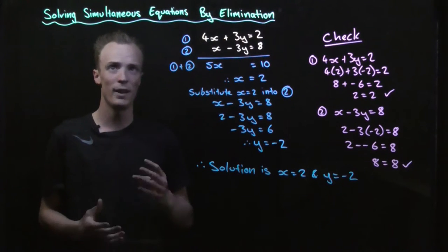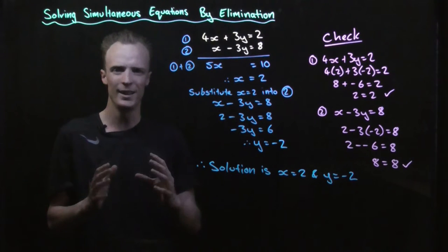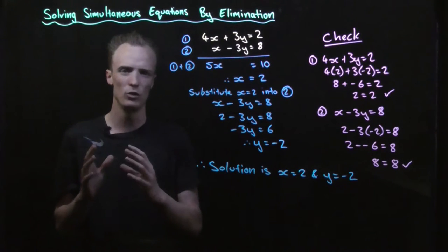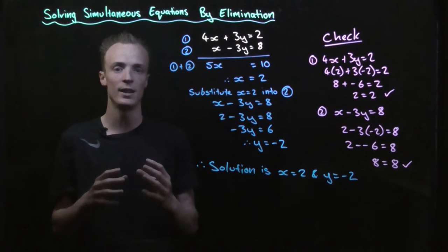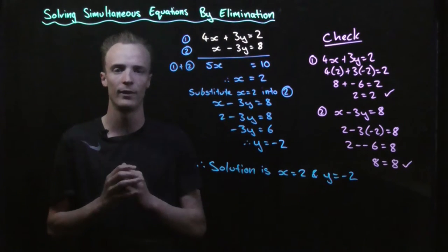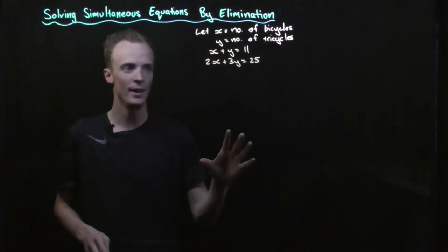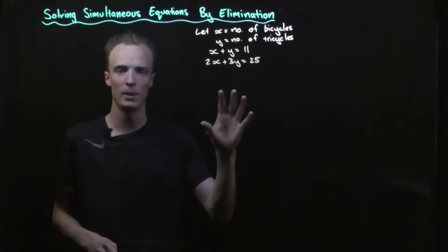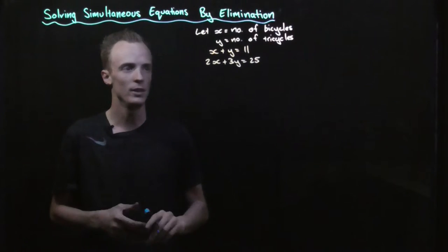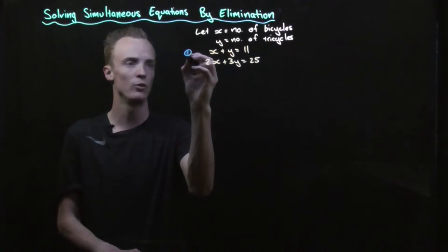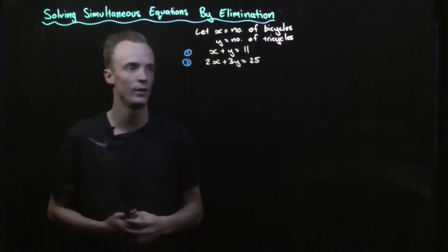Now that we've looked at solving simultaneous equations through elimination, let's take a look at our original cycling puzzle and see how we can use the elimination method to find the correct solution. Here are the two equations we found from our cycling puzzle in an earlier video. I'm going to call the first one equation 1 and the second one equation 2 so we can refer to these.